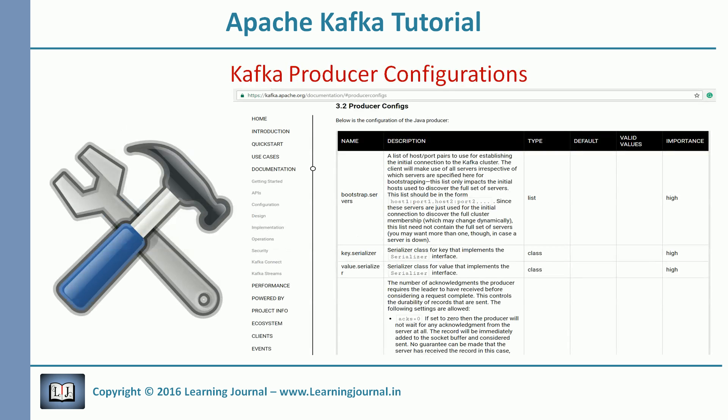The Kafka producer provides many configuration parameters. The complete list of producer parameters is available in Kafka documentation. Most of the parameters have a reasonable default value, so there is no need to customize many of them. I recommend that you check the documentation and read all of them at least once — we have excellent documentation and most of them are straightforward.